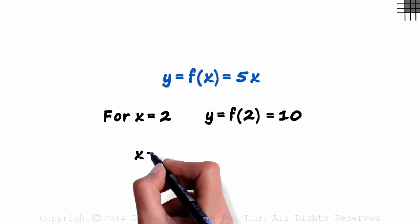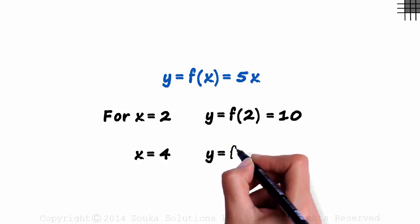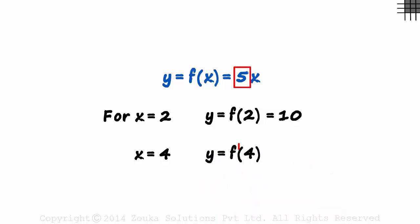And what if x is 4? Y will be f of 4. And 5 times 4 is 20. So don't get confused when you see a y or a g or an f. The meaning of the function does not change.